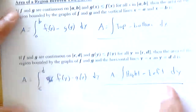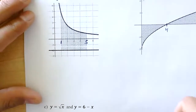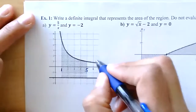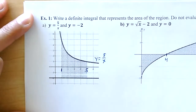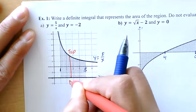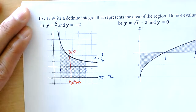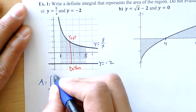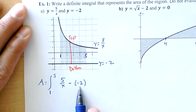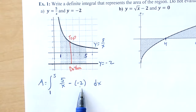Let's look at number one. I have y = 5/x and y = -2. From the graph, y = 5/x is on top and y = -2 is on the bottom. The integral is set up from 1 to 5: the top function minus the bottom function — that's (5/x) minus (-2) with respect to x. Top minus bottom.